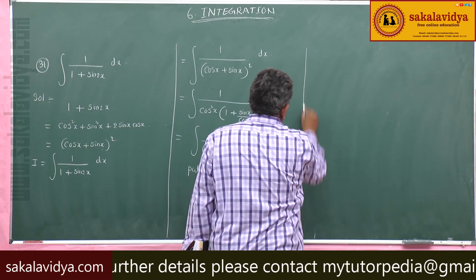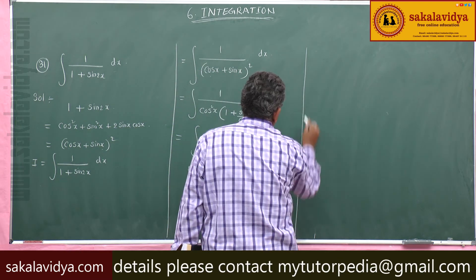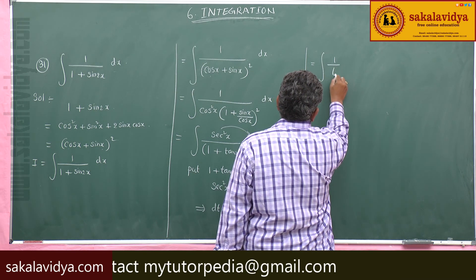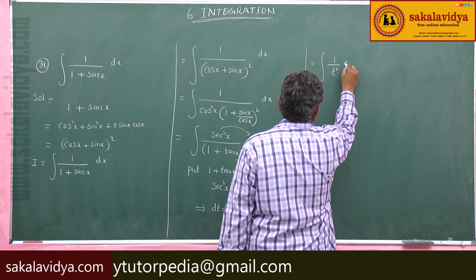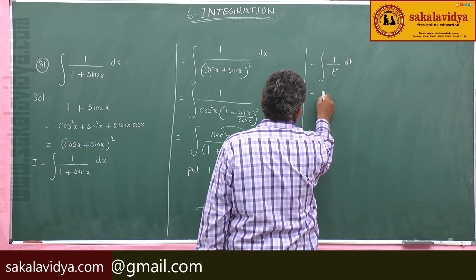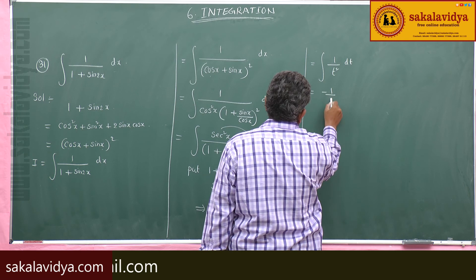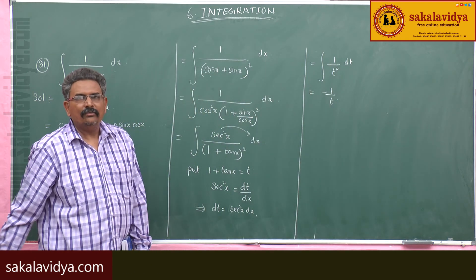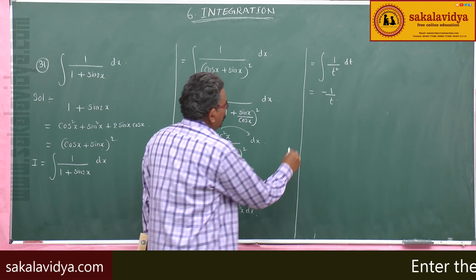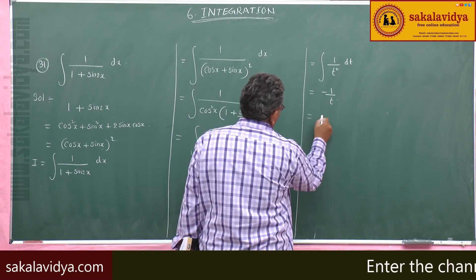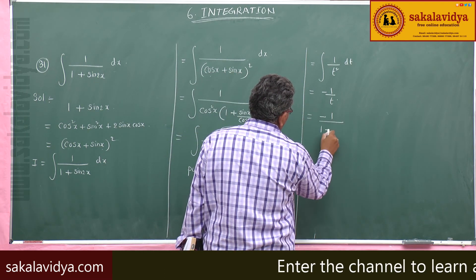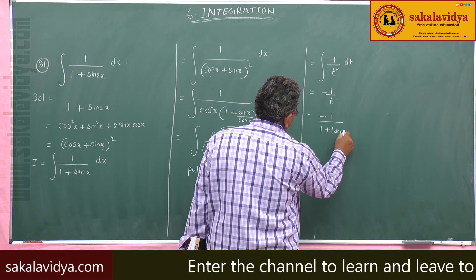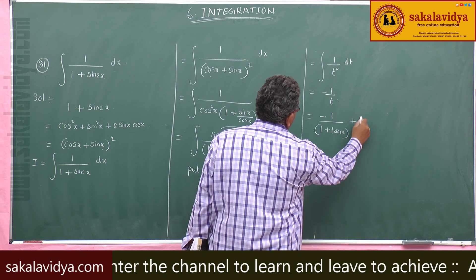So this can be written as integral of 1 by t square dt, which equals minus 1 by t. What is t? t is nothing but 1 plus tan x. So this is equal to minus 1 by 1 plus tan x plus constant of integration.